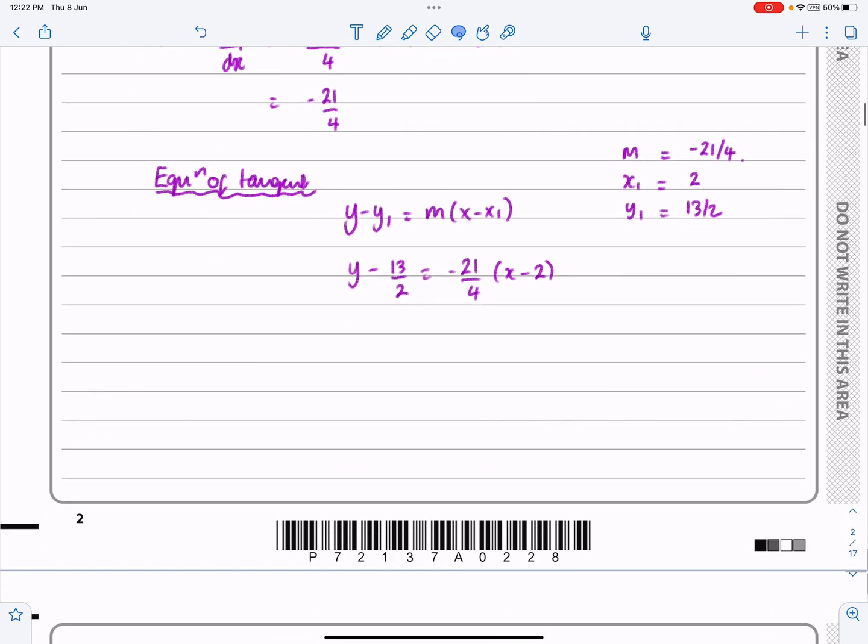Now, we've come across this quite a few times. When I get to this situation, don't mess around with this at all. Just multiply everything by the denominator. Multiply everything by 4, and then you can tidy it up afterwards. So we quite often get our gradient being some sort of fraction here. So I'm just going to multiply everything by 4, which is going to give me 4y - 26 = -21(x - 2).